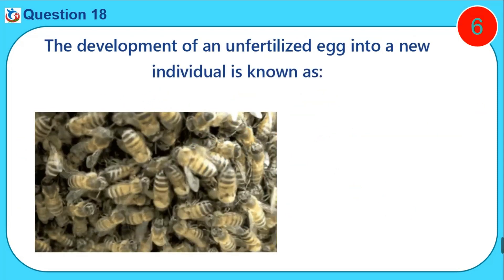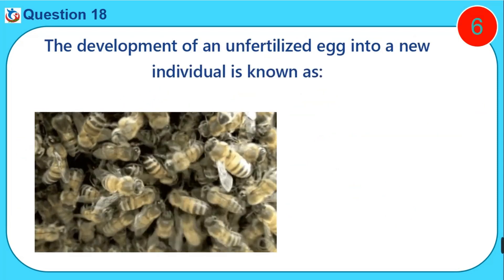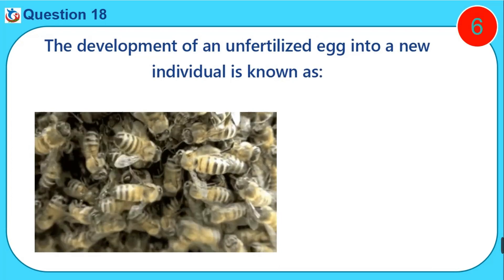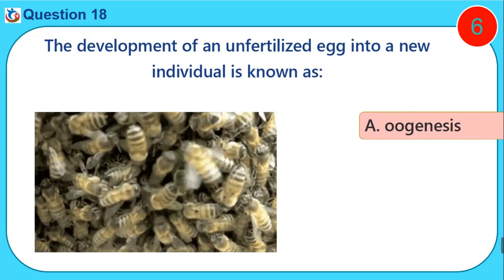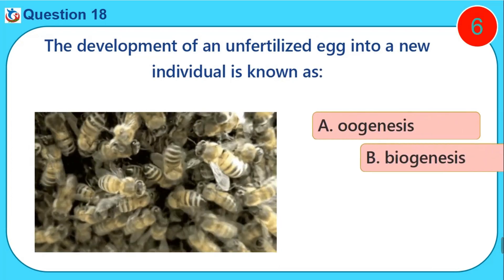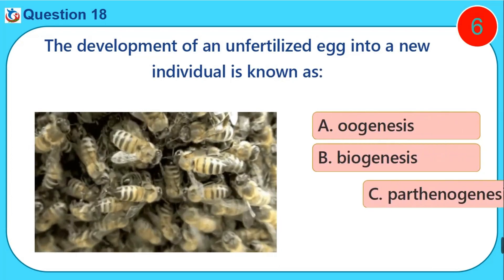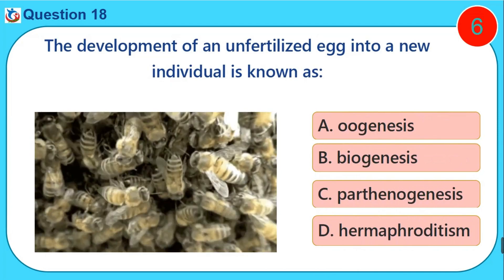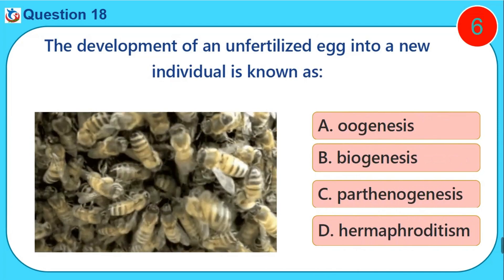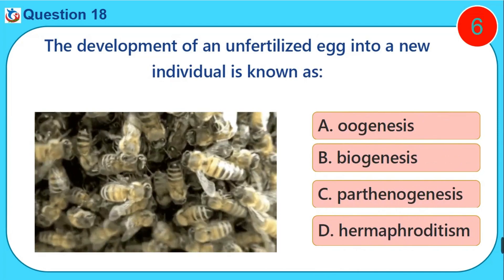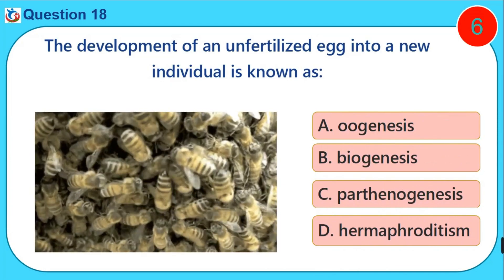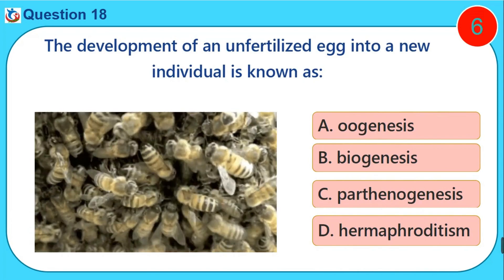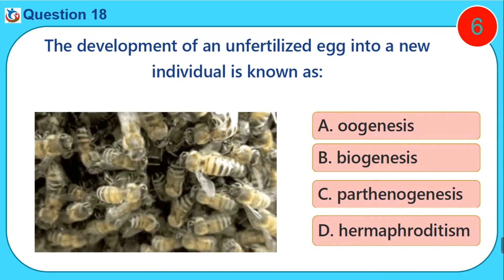The development of an unfertilized egg into a new individual is known as dash. A. Oogenesis. B. Biogenesis. C. Parthenogenesis. D. Hermaphroditism.